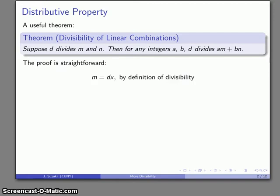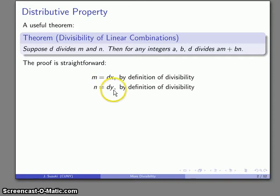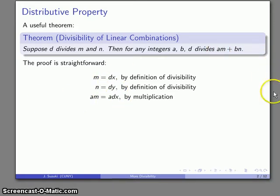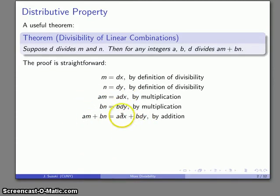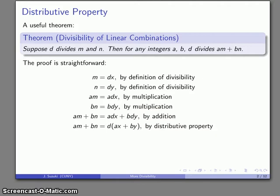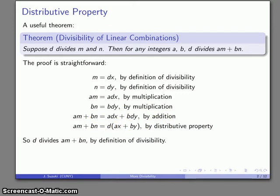The proof of this is relatively straightforward. By the definition of divisibility, if D divides M then M equals D times X, and likewise N equals D times Y. So consider that linear combination AM plus BN: that's A times DX plus B times DY. By the distributive property, the common factor D can be removed, and this linear combination equals D times something, which says that D is a divisor of that linear combination.